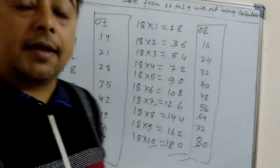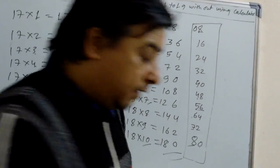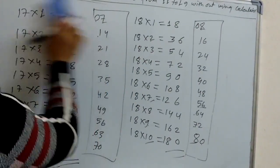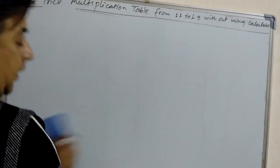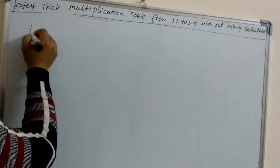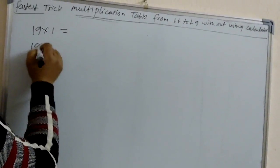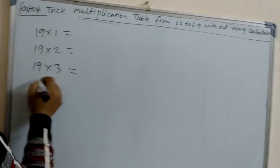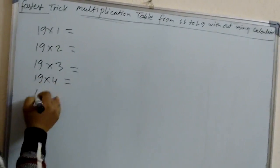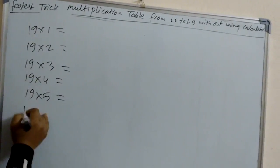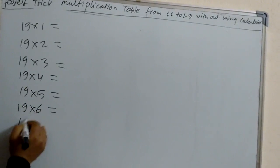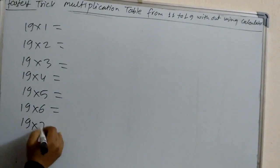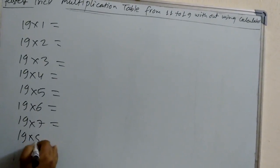And last — multiplication table of 19. Let's learn using the same method, we can apply the same method to 19 also: 19×1, 19×2, 19×3, 19×4, 19×5, 19×6, 19×7, 19×8, 19×9, 19×10.